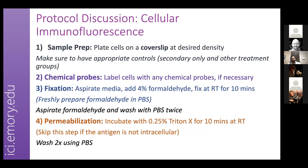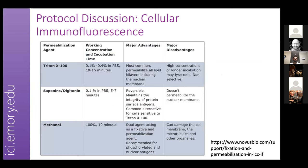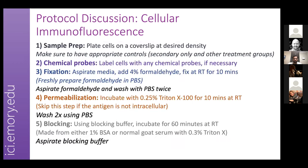Once fixation is done, permeabilize your cells — I typically use 0.1 to 0.3% Triton X-100 for 10 minutes. You can skip this step if the antigen of interest is not intracellular. There are three main permeabilization agents: Triton X-100, saponin, digitonin, and methanol — each with its own advantages and disadvantages. April covered all three in the previous talk, which I encourage you to watch. The summary slide covers advantages and disadvantages for each agent.